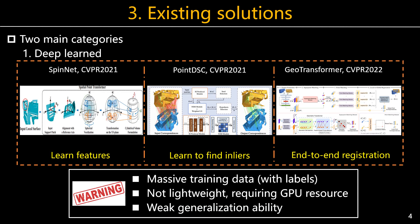The approaches for point cloud registration include deep-learned and traditional geometric methods. For deep-learned ones, we focus on learning good features, good classifiers, and end-to-end networks to estimate transformations. However, learned methods require a large amount of training data and GPU resources, and often lack good generalization ability across different data modalities.